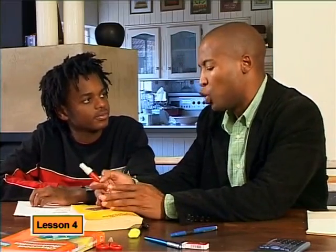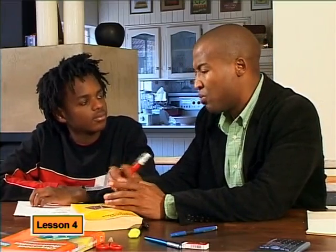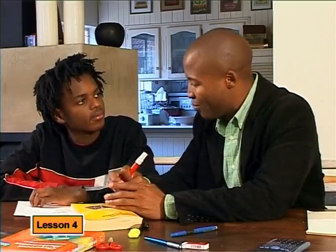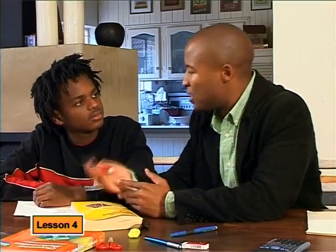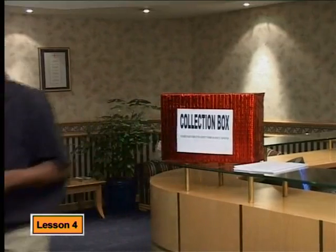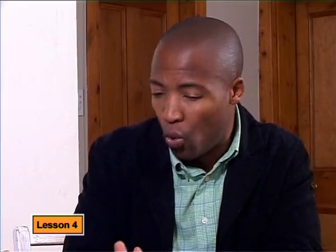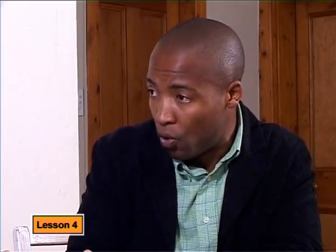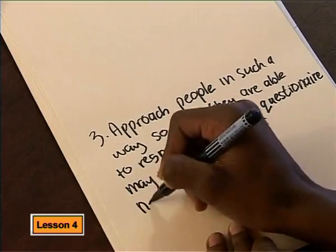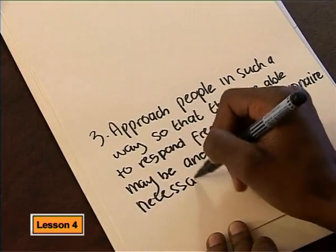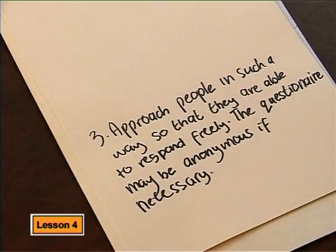Like when people vote in elections. That's right — that's one of the ways they ensure that elections are free and fair. It's also important that every person is approached in exactly the same way. How a person is approached can influence the results. It can help to ask them to fill in a questionnaire which you collect in a closed box rather than answering you face to face. In a government election or referendum, people might not want others to know who they're voting for. They may not answer as honestly if the survey is not anonymous. So we can write: approach people in such a way that they are able to respond freely — the questionnaire may be anonymous if necessary.